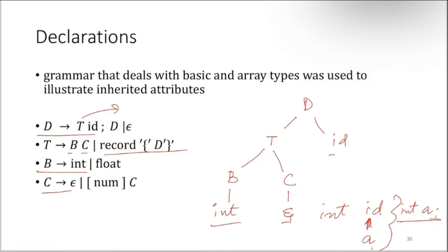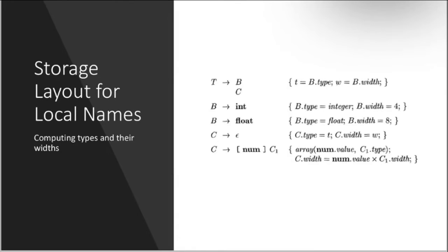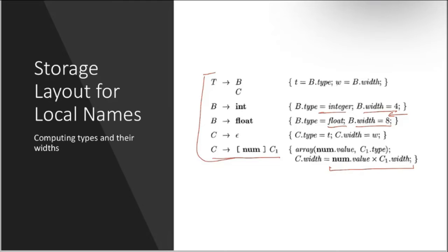For storage layout of local names, the width of each type is defined. For example, float type has width 8 bits, and integer type has a defined width. For arrays, the storage is calculated as number of elements multiplied by the width. This is how the programming language calculates how much memory needs to be assigned to an array or a variable.